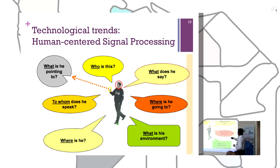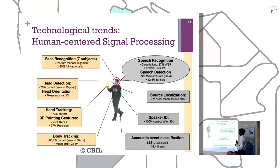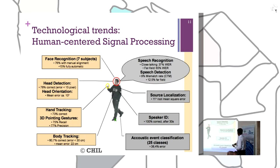For example, by looking at a video of a person walking or interacting with others, one can automatically determine who the person is using face recognition, what they say using speech recognition, where they are going, and what the environment is. All of these can be posed as a series of signal processing or machine learning problems, enabling automatic analysis of the interaction — knowing who is speaking, what they said, and where they are looking.